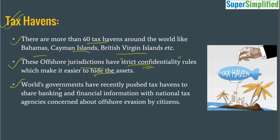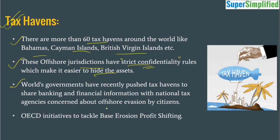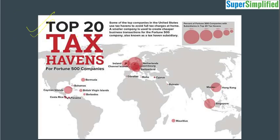But now the world's governments are facing a lot of problems because of tax evasion, because tax is a large portion of the revenue of the government and that is getting evaded — shifted to other countries. So the world's governments have recently pushed for tax havens to share banking and financial information with national tax agencies, which are concerned about the offshore evasion by citizens. For example, OECD countries have taken initiative to tackle the problem of base erosion and profit shifting. This is the list of the top 20 tax havens. These slides are available in the link in the description, and you can download them from our Facebook page.